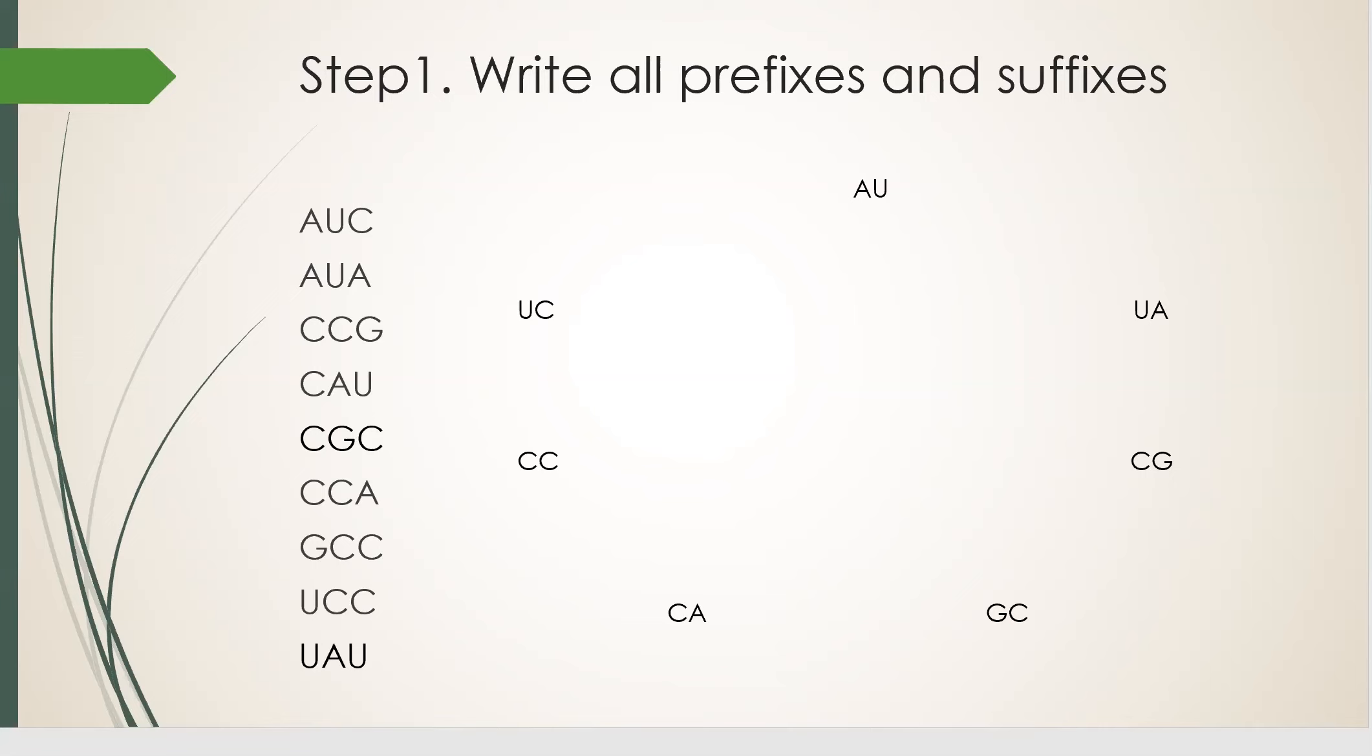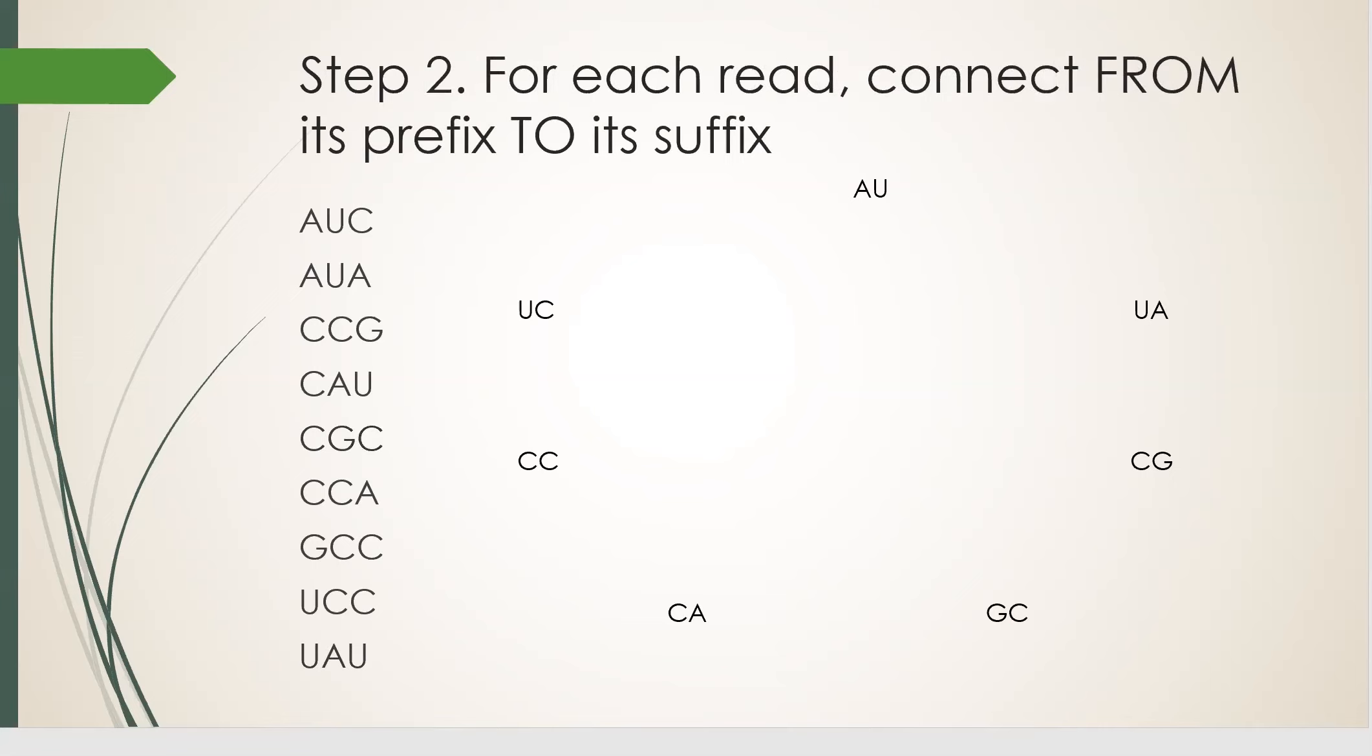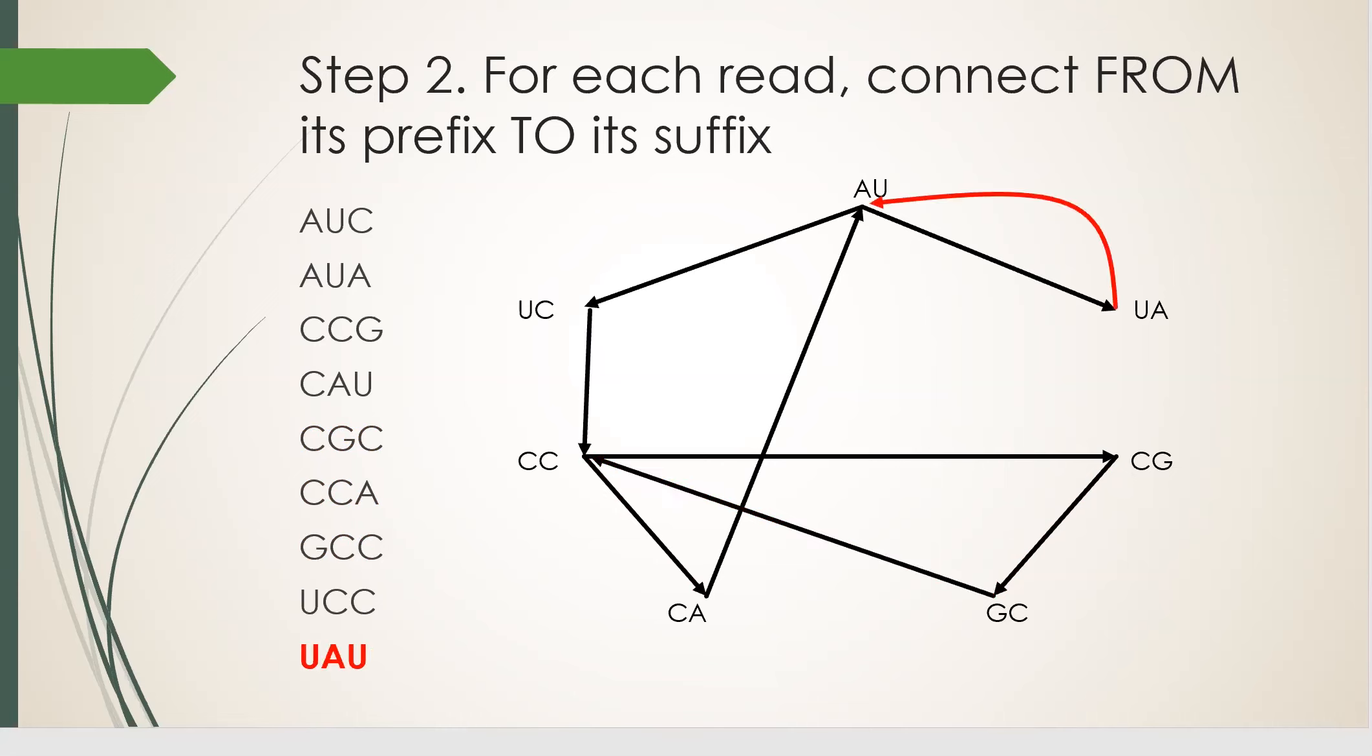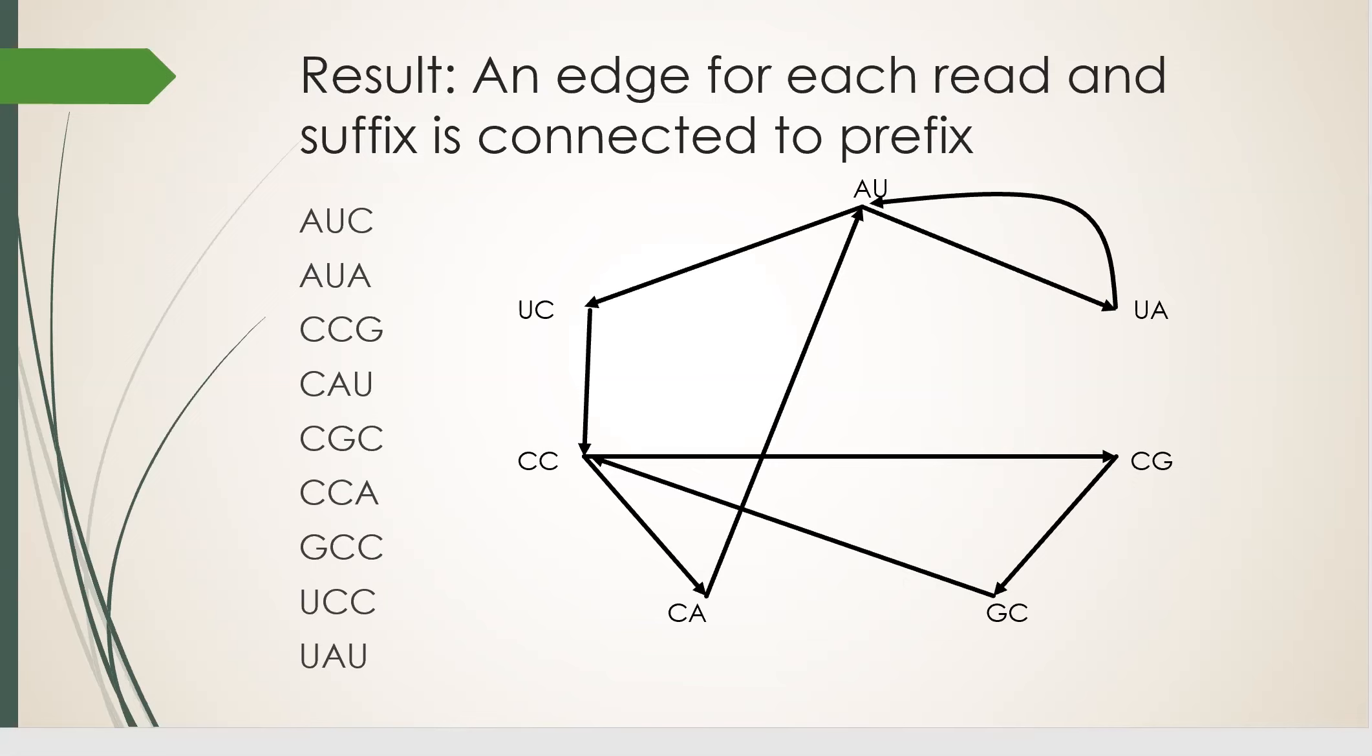Now step two. For each read, we connect from its prefix to its suffix. So the first read is AUC. That means we connect from AU to UC, so we have a directed edge that represents the AUC read. And we keep going. Here's the result. We have a directed graph where each edge represents a read.